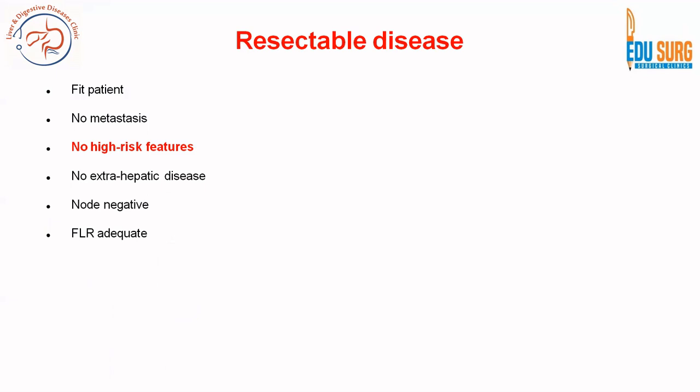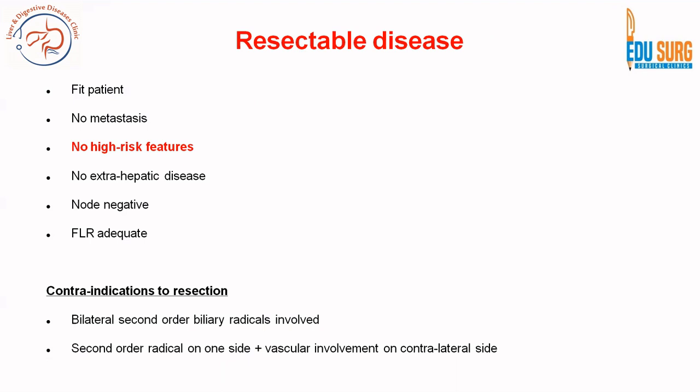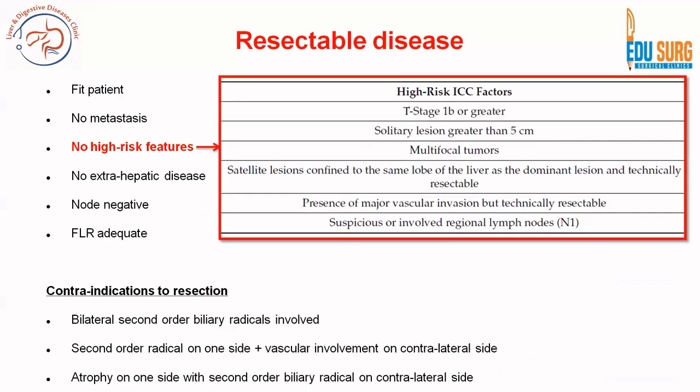FLR — future liver remnant — is adequate, because we are going to need a liver resection. Future liver remnant assessment is very important. When it comes to specific contraindications to resection, if bilateral second-order biliary radicals are involved, reconstruction is not possible and volumes are low. If a second-order radical is involved on one side with vascular involvement on the contralateral side, that is again a contraindication to resection. Atrophy on one side with second-order biliary radical involvement on the contralateral side is also a contraindication.